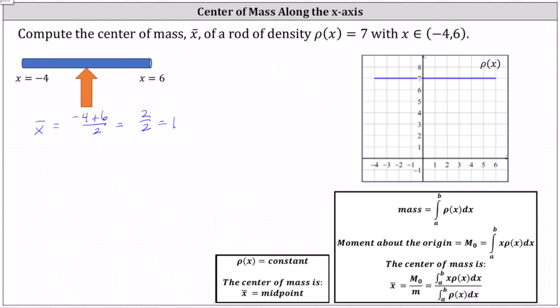Another way to find the center of mass would be to find the length of the rod and then add that length to the left side of the rod. For example, the length of the rod L is equal to six minus negative four, which equals positive ten, and the length of the rod divided by two is equal to five.